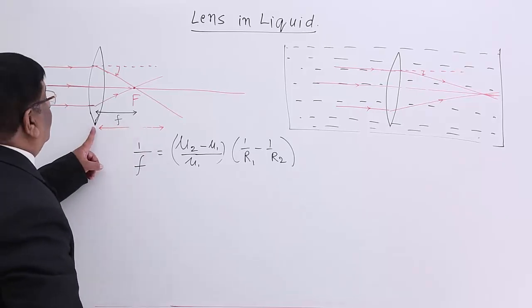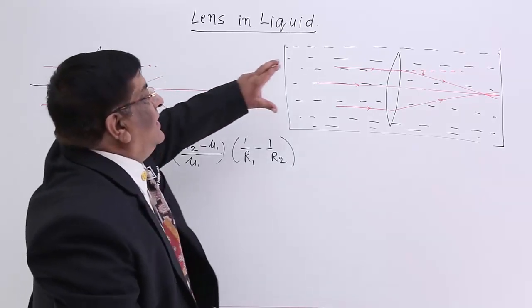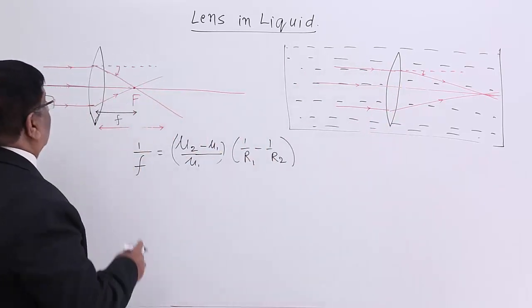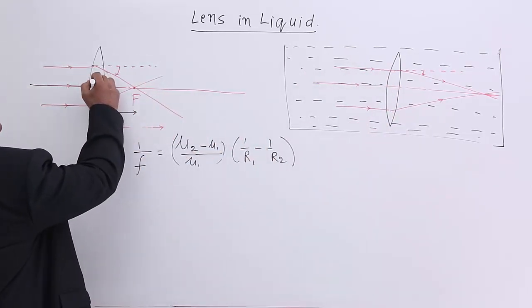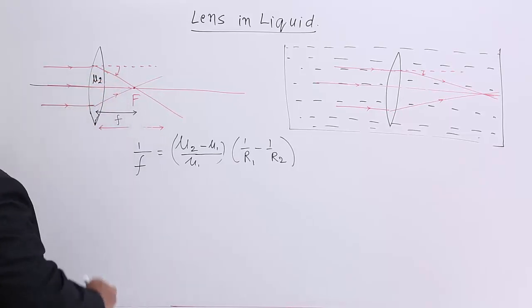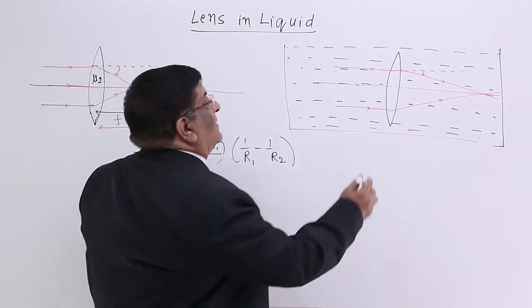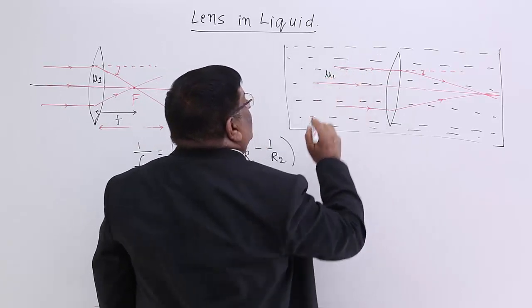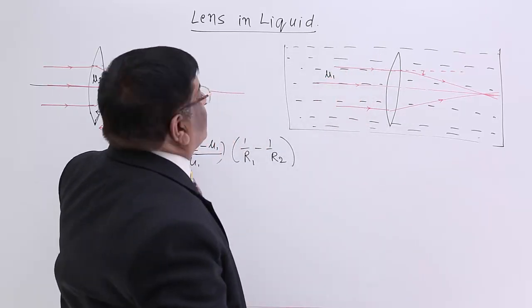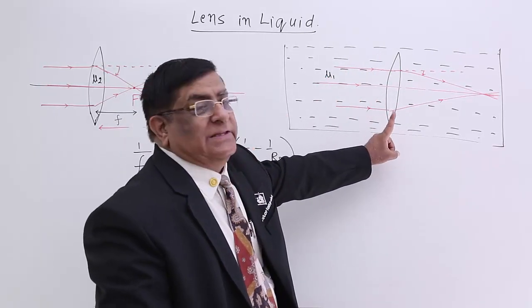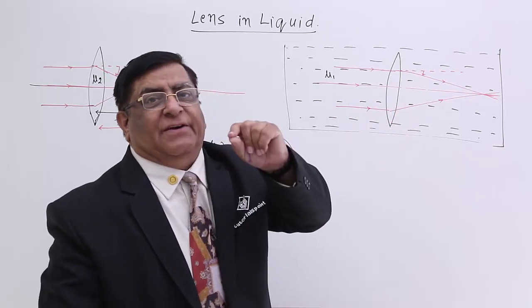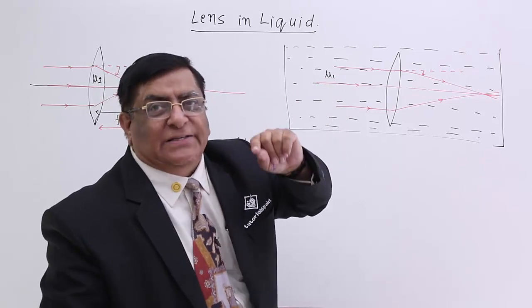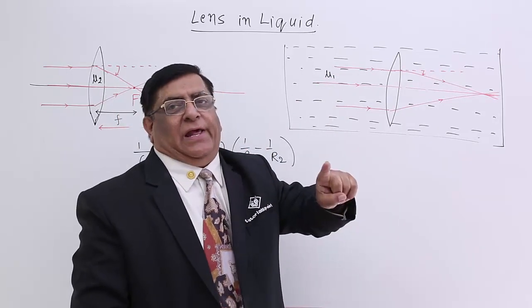Now if we dip this lens into this liquid, the material of the lens has a refractive index mu2 and the refractive index of this liquid is mu1. When this lens is dipped in this liquid, what is the effect on its power of bending? What is the effect on its focal length?